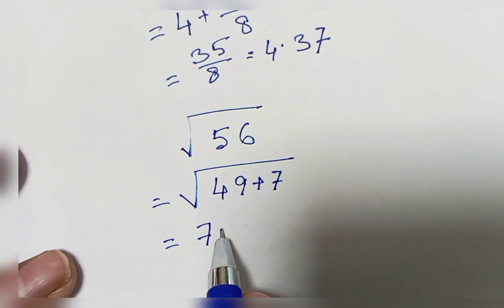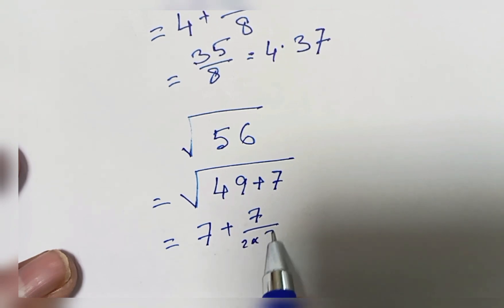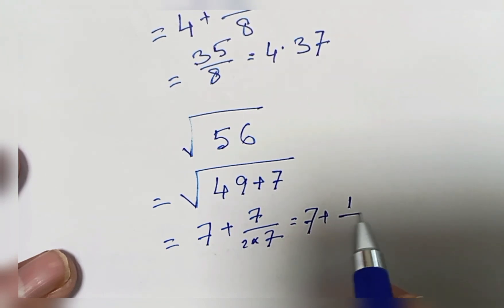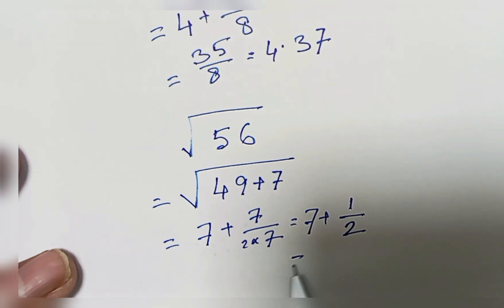You take 7 plus 7 divided by 2 times 7, which equals 7 plus 1 by 2, that means 7.5.